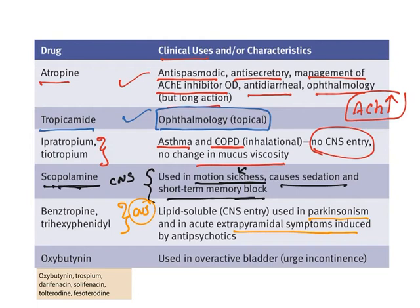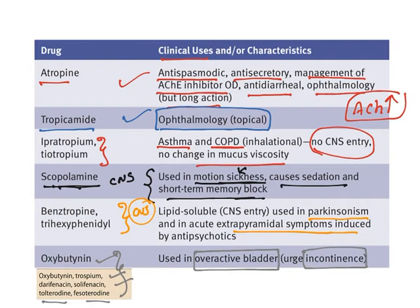A group of drugs including oxybutynin, trospium, darifenacin, solifenacin, tolterodine, and fesoterodine are used to treat overactive bladder, also called urinary incontinence. Especially in elderly people who lose control of urination, these anticholinergic drugs inhibit involuntary urination. These are all the clinical uses of anticholinergic drugs.